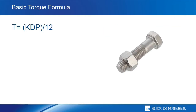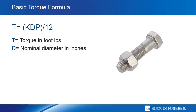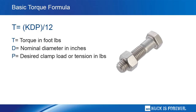To further clarify the nature of torque, here is the formula by which it is measured. T is torque in foot-pounds. The value is the result of K, the coefficient of friction, times D, the nominal diameter of the bolt in inches, times the desired clamp load or tension in pounds. Note the K element, the coefficient of friction — it is critical to understanding torque.